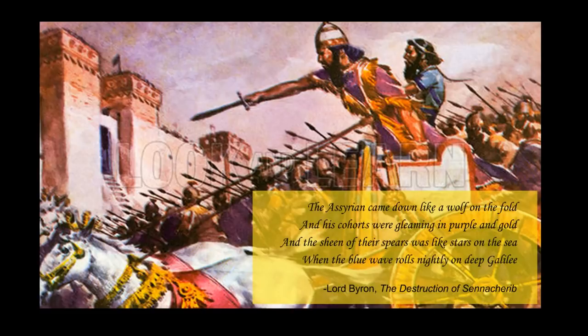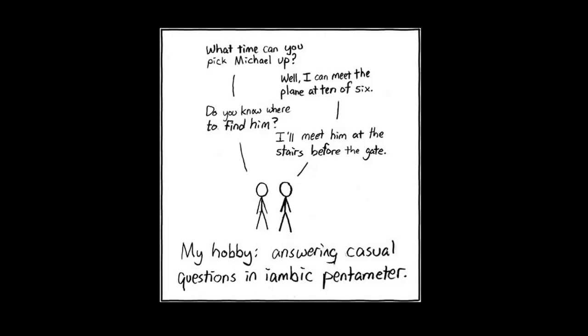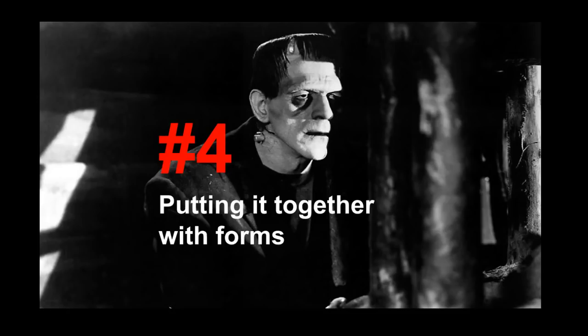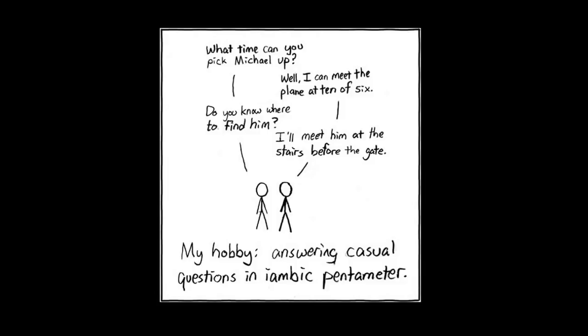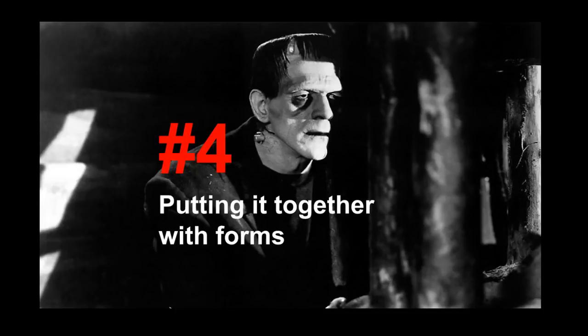So you now know how to create lines with syllabic and accentual rhythm. You've armed yourself with a variety of phonetic tools like rhyme and alliteration. It's time to put them all together and bring your poetry to life. It's time to explore poetic forms.